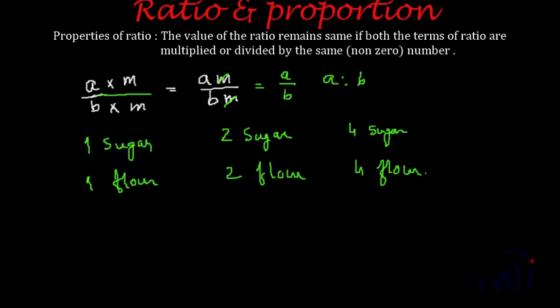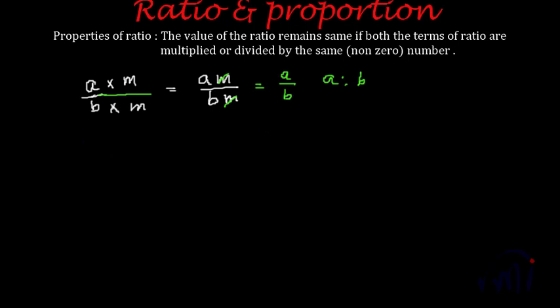So this is what is meant by multiplying both the terms by a number. And if I divide both the terms by the same number, that means suppose the original ratio is a is to b, and if I divide both terms—first term by m and second term also by m—then this will become a by m multiplied by the reciprocal of this, which is m by b. And here also this m will cancel this m.